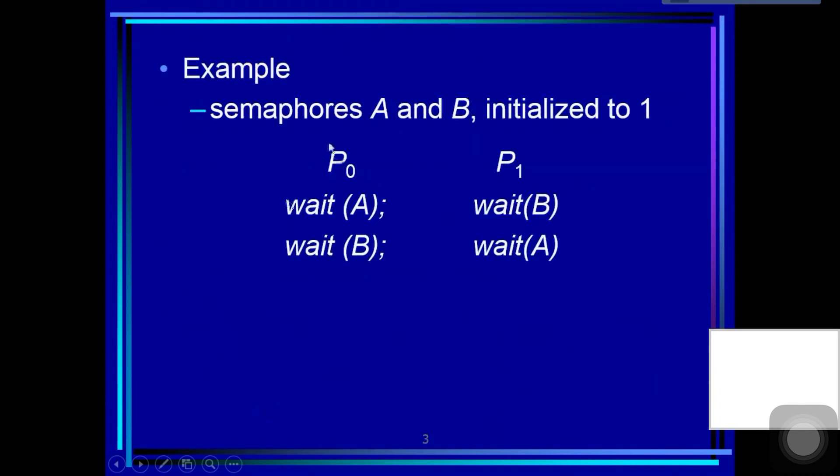Process P0 first executes wait(A) and gets resource A. Then process P1 executes wait(B) and gets resource B.